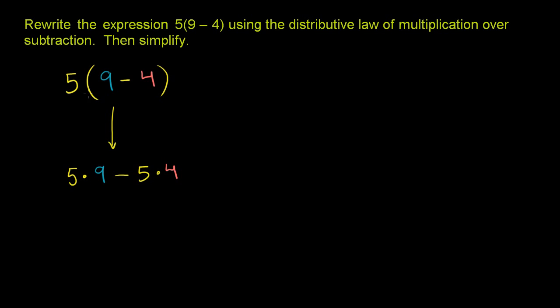Notice, we distributed the 5. We multiply it times both the 9 and the 4. And in the first distributive property video, we gave you an idea of why you have to distribute the 5, why it makes sense, why you don't just multiply it by the 9. And we're going to verify that it gives us the same answer as if we just evaluated the 9 minus 4 first.